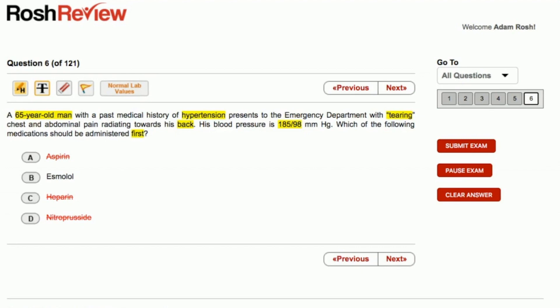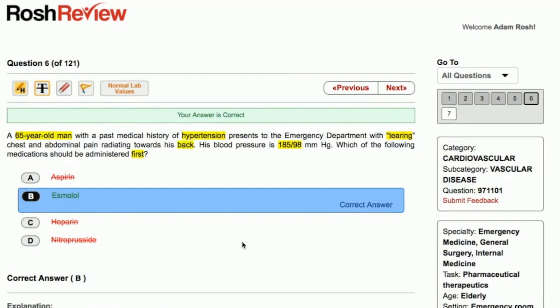However, the key here is to administer esmolol first. Let's make sure that that is correct. Indeed it is. And then if we still require blood pressure reduction, we could administer nitroprusside second. So the best answer choice for this one is esmolol.